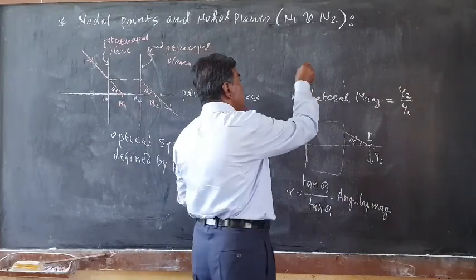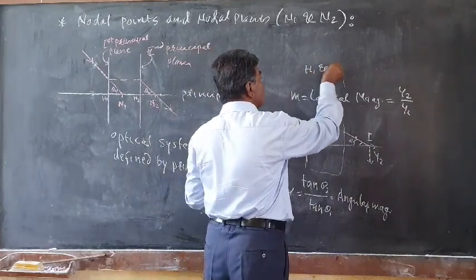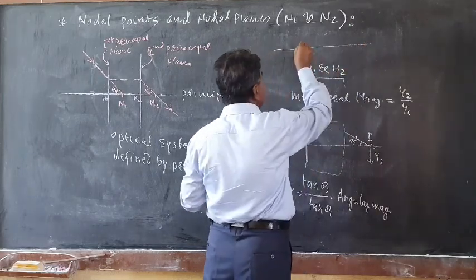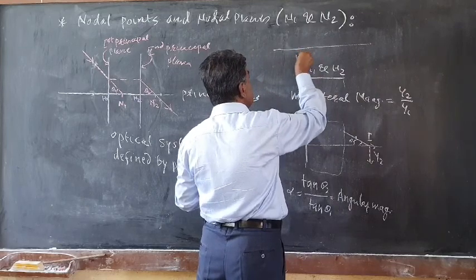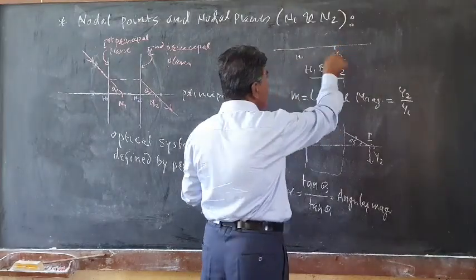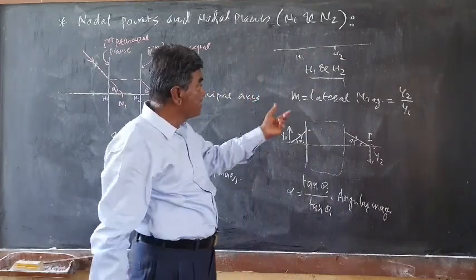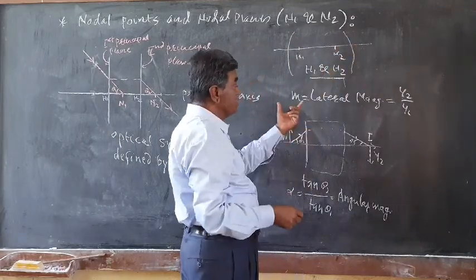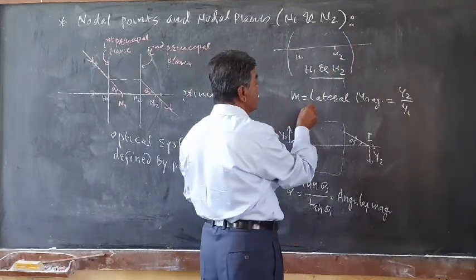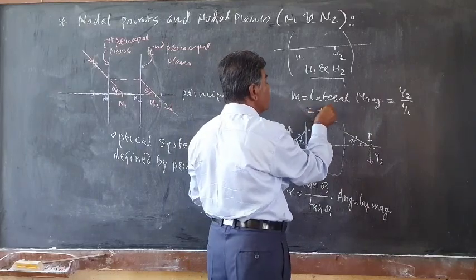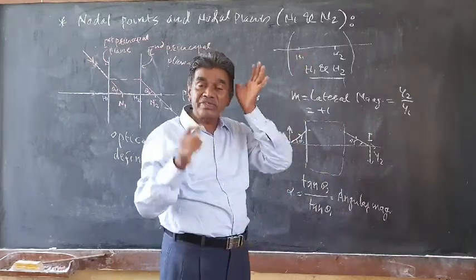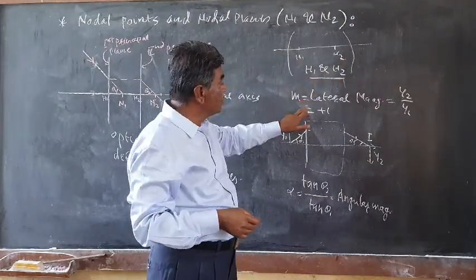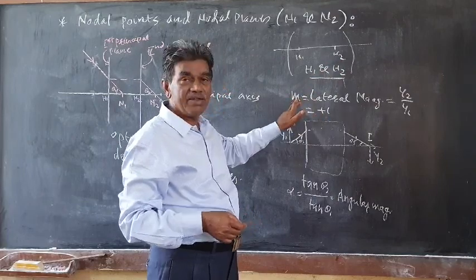The principal points H1 and H2 are points on the principal axis. H1 and H2 are the points on the principal axis such that the lens system has a unique positive lateral magnification of plus one.